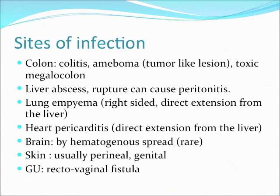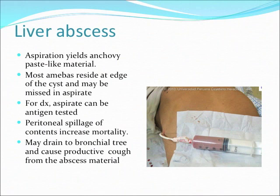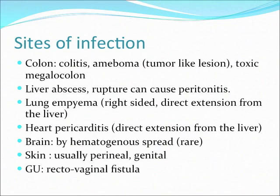Sites of infection: it can be in the colon, causing colitis. It can cause an amoeboma, which is like a tumor that, if seen in an X-ray or CT scan, can look like a malignancy — they may go for surgery and find it's only amoebas. It can cause toxic megacolon, liver abscesses, and if the liver abscess ruptures, it can cause peritonitis. It can cause lung empyema, cardiac pericarditis, brain abscesses (very rare), and irritation of the skin in the perineal and genital area. Sometimes it can also cause rectovaginal fistula.